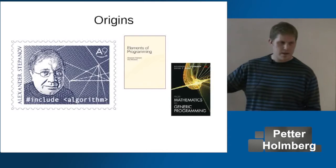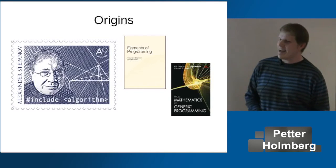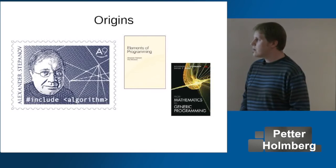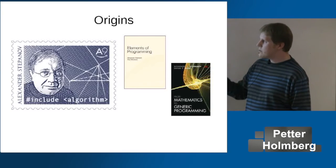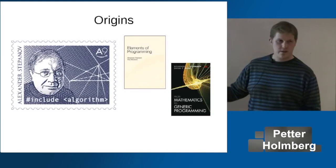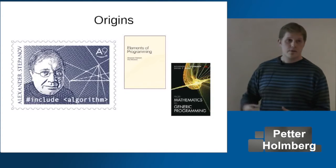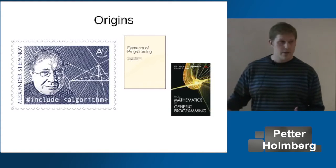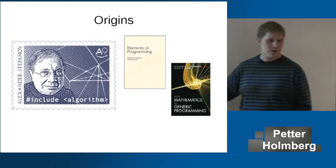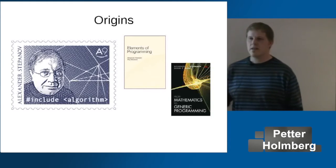He got a nice stamp as a retirement present. Before he retired, he wrote two books about this: with Paul McJones he wrote 'Elements of Programming', and with Daniel Rose 'From Mathematics to Generic Programming'. A lot of the theory in this talk is based on material you will find in these books, if you are interested in digging deeper.